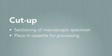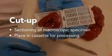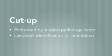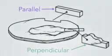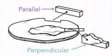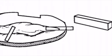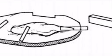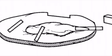Cut up refers to sectioning of the macroscopic specimen so it may be placed into specially designed cassettes for processing. Small samples are often placed directly into these cassettes, bisected or trimmed. This task is up to the surgical pathology cutter, who will identify anatomical landmarks for correct specimen orientation so appropriate sections can be taken. A perpendicular section shows how close a mass is to the margin, while parallel sections are used when the margin appears widely free of the area of interest. To maximise the amount of information that can be obtained from a tissue section, different areas of the specimen are sampled, as opposed to random, indiscriminate sampling.